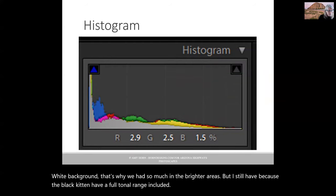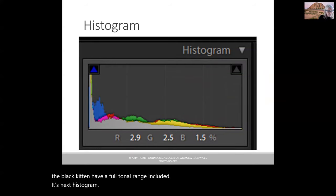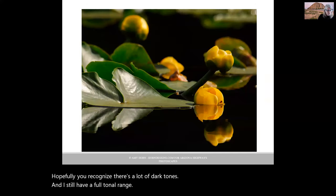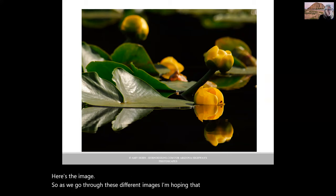This next histogram. Hopefully you recognize there's a lot of dark tones, and I still have a full tonal range. Here's the image. As we go through these different images, I'm hoping that you'll think through as you see a histogram, what does the tonal range look like?